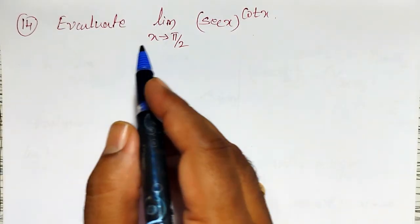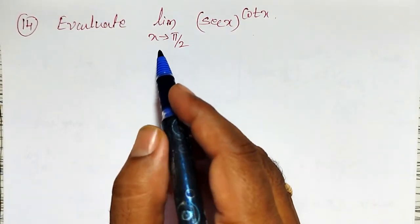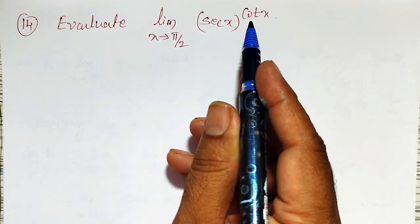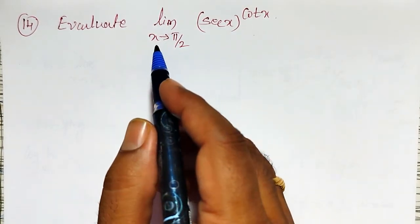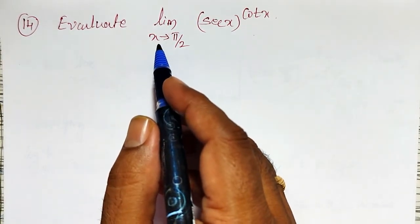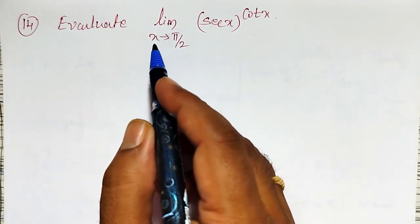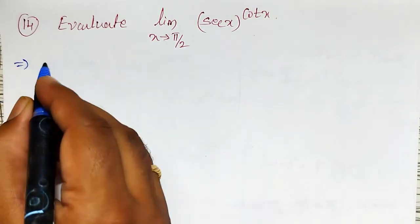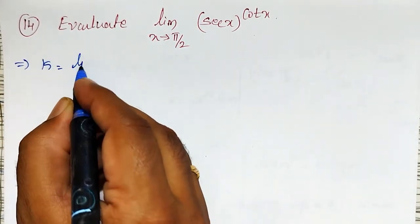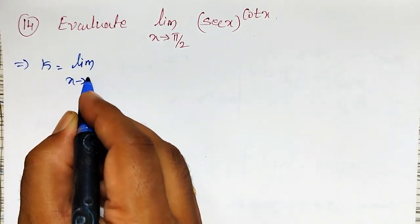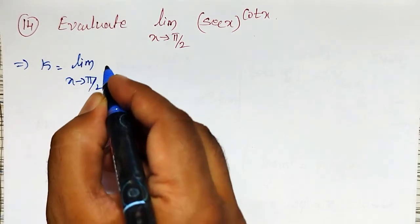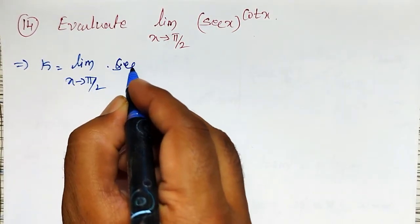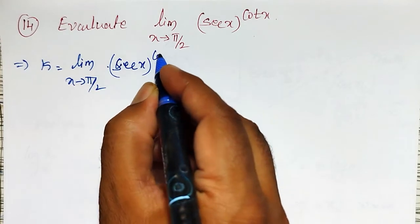In this video, I am going to evaluate the limit as x tends to pi by 2 of secant x raised to the power cot x. Up to now, whatever examples were solved, many are of the type x tends to 0. This is different — x tends to pi by 2. Let me call this as k equal to limit as x tends to pi by 2 of secant x raised to cot x.